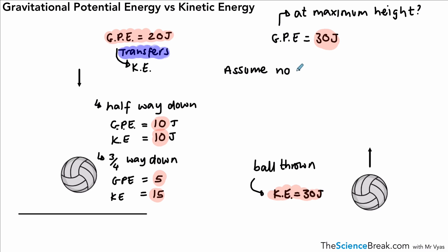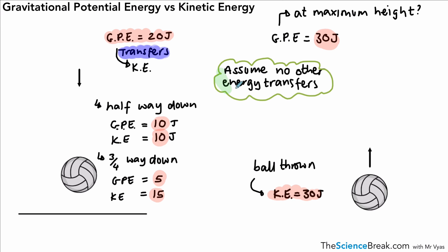In reality, energy can be transferred in other ways — for example, heat generated by friction of the ball with the air. In this question we assume those transfers are either absent or so small we don't take them into account. This is how we calculate gravitational potential energy and the relationship between gravitational potential energy and kinetic energy for a ball being thrown up or falling down.